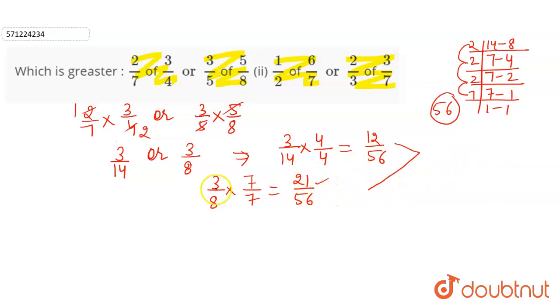And 21 by 56 is the fraction 3 by 5 of 5 by 8, which is the greater fraction. So 2 by 7 of 3 by 4 is less than 3 by 5 of 5 by 8.